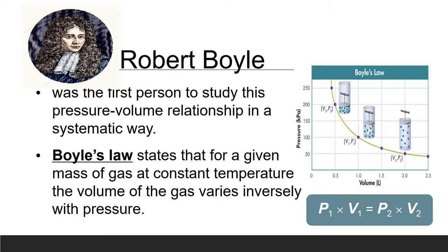We have here the formula: P1 times V1 equals P2 times V2. P1 stands for initial pressure, P2 is final pressure, V1 is initial volume, and V2 is final volume. Meaning to say, we're going to have a computation on this gas law.